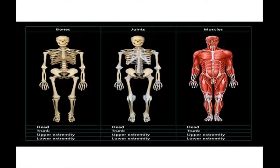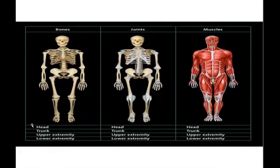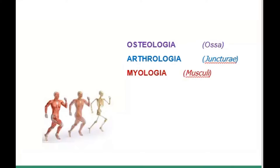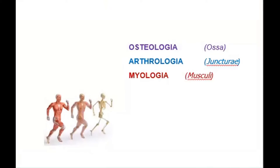For these systems, the same location in the classification is present. Some parts — for example, in bones, joints, and muscles — include the head, trunk, upper extremity, and lower extremity. The three biggest scientific parts of human anatomy are osteology, arthrology, and myology.